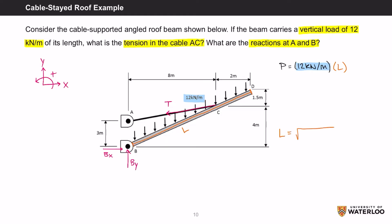L equals the square root of 10 squared, which comes from 8 meters plus 2 meters, plus 5.5 squared, which comes from 4 meters plus 1.5 meters. This means that L equals 11.4 meters.